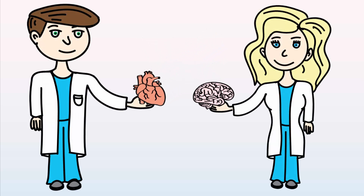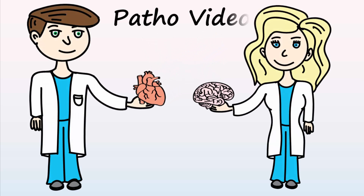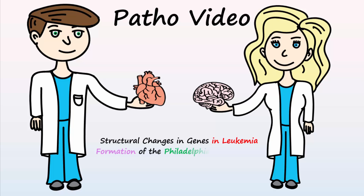Welcome to another patho video. Today, let's talk about the common structural gene changes that can lead to leukemia and the formation of the Philadelphia chromosome.